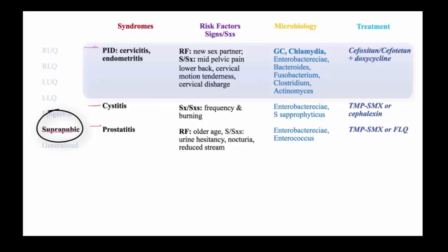In the case of pelvic inflammatory disease, as opposed to salpingitis or tubo-ovarian abscess, the pelvic pain is central, and as with previous infections, a new sexual partner might be identified. Pain typically radiates to the back, and on physical exam, you can elicit cervical motion tenderness, which is a key physical finding to establish the diagnosis, in association with cervical discharge.